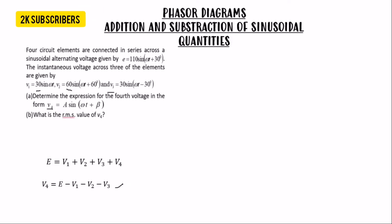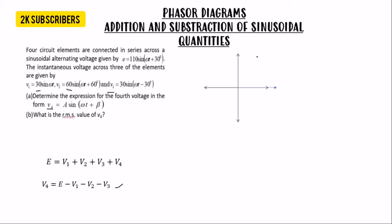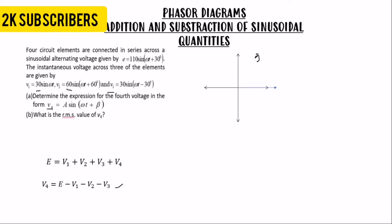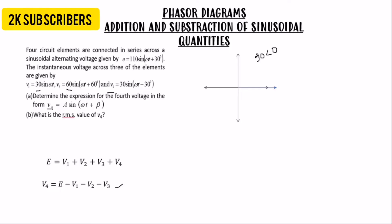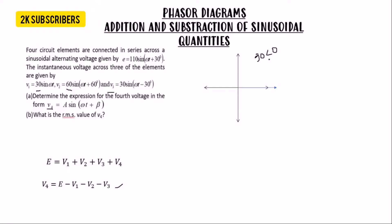We are going to represent each quantity on a phasor diagram. For Vin1, when we take the Cartesian plane, the angle given is zero degrees, so it lies on the positive x-axis. In complex number form the modulus is 30 and the argument is 0°. To find the x and y components: x = 30 cos(0°) and y = 30 sin(0°) respectively.